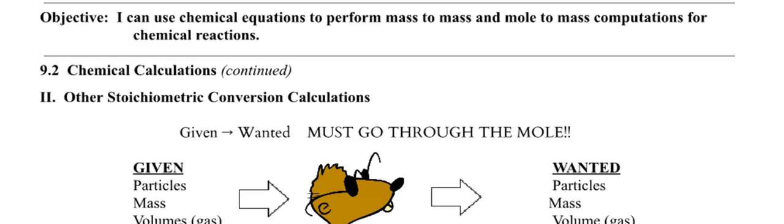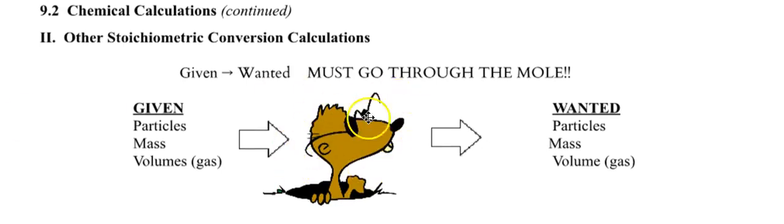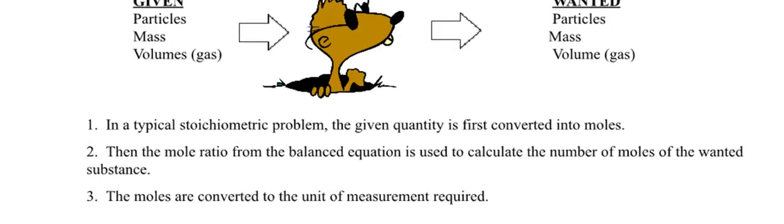We still need to set up a BCA table. We still need to go through the mole first. So if we're given any of these things, we need to convert to the mole, do our BCA table, and then convert to what we truly want. In a typical stoichiometric problem, the given quantity is first converted into moles. Then we use the mole ratio from the balanced equation to calculate the number of moles of the wanted substance.